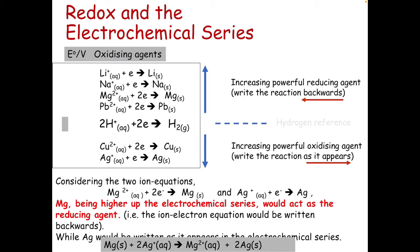Looking at magnesium and silver: magnesium is higher up the electrochemical series, so it's going to be the reducing agent, and you would write that equation backwards. You would keep the silver the same. If they give us any two metals, we should be able to see which one is the better reducing agent and which is the better oxidising agent — the reducing agent is the one that's oxidised, and the oxidising agent is the one that's reduced.